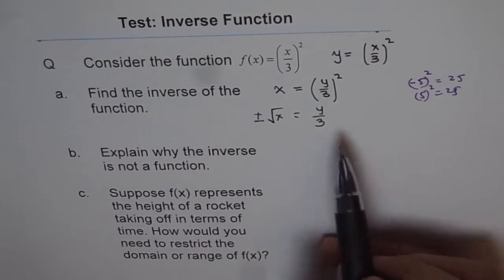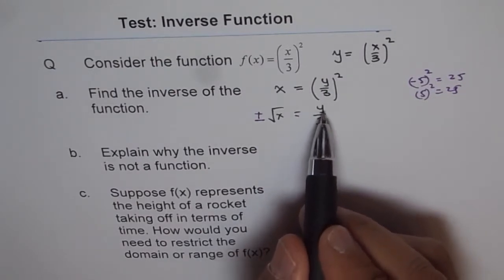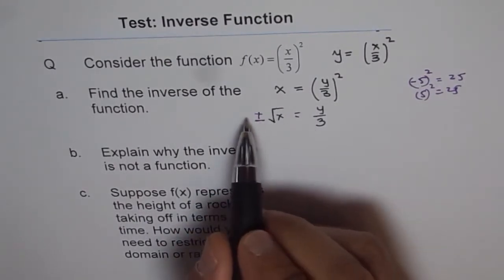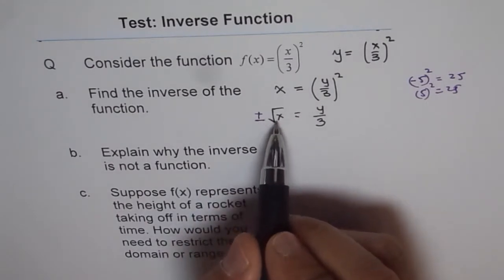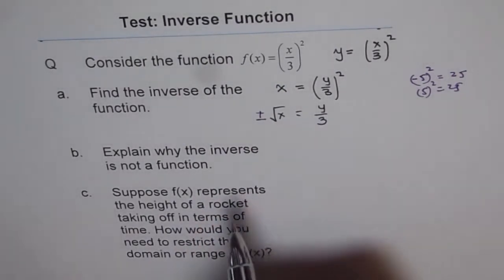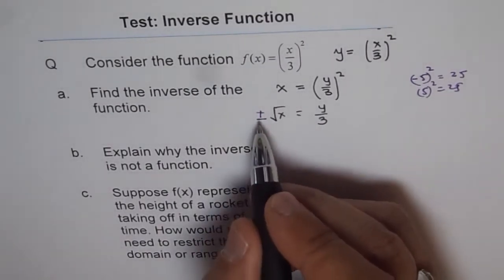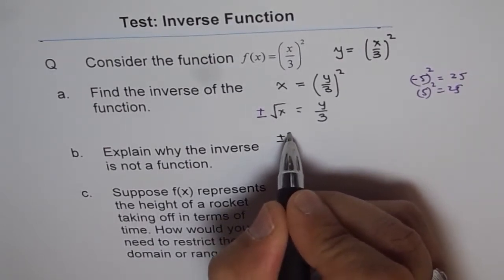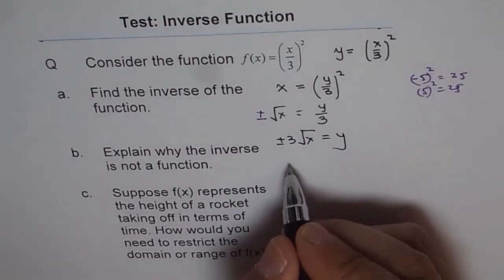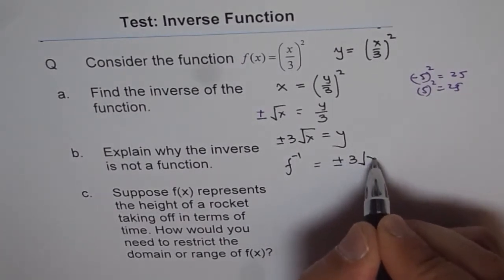Now I want to highlight another portion. When you want to isolate y, you need to multiply both sides by 3. I have seen students writing just 3 and then ± √x = y, getting stuck with 3 written there and not knowing what to do next. When you multiply, you are multiplying 3 with the square root term, which carries the ± sign. So it is actually y = ±3√x. That is the inverse of your function, written as f⁻¹ = ±3√x.